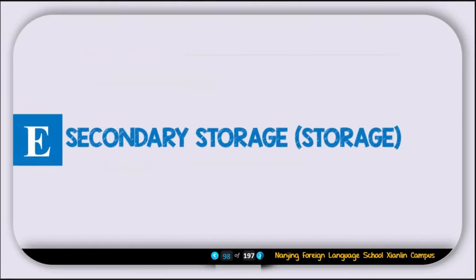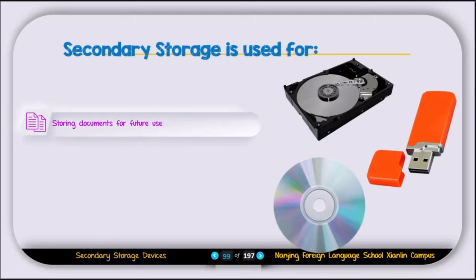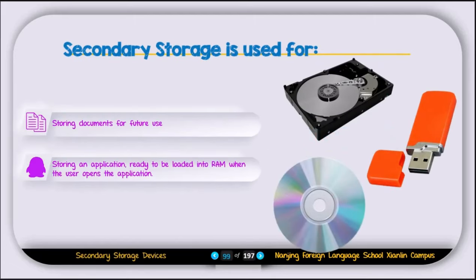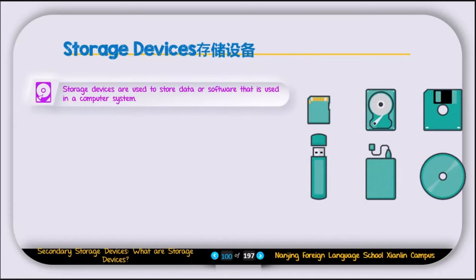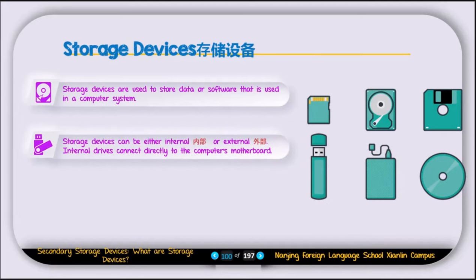Now we move to secondary storage devices. Secondary storage devices are used for storing documents for future use and storing applications ready to be loaded into RAM when the user opens them. Examples include hard disk, CD, and USB. Storage devices can be either internal, connected directly to the computer's motherboard, or external, such as USB drives and CDs.